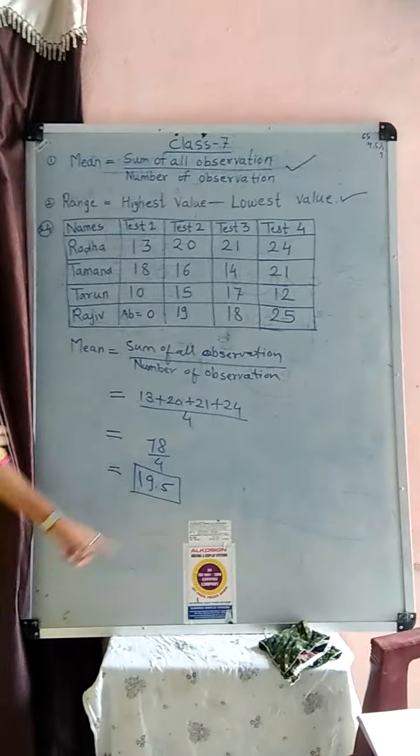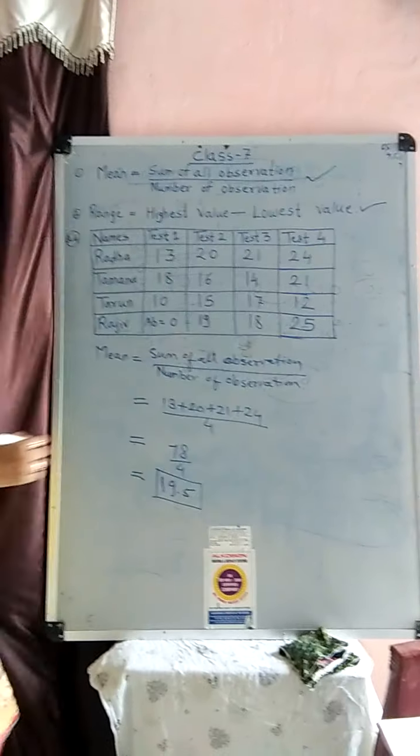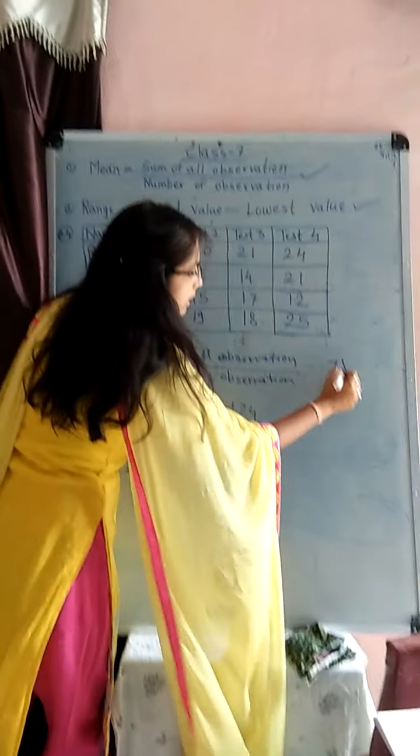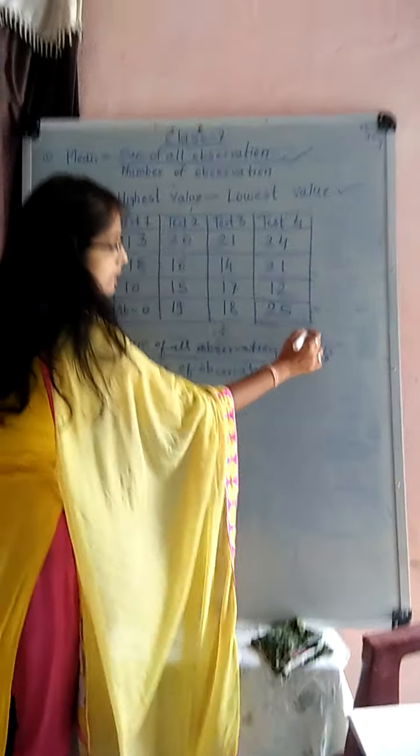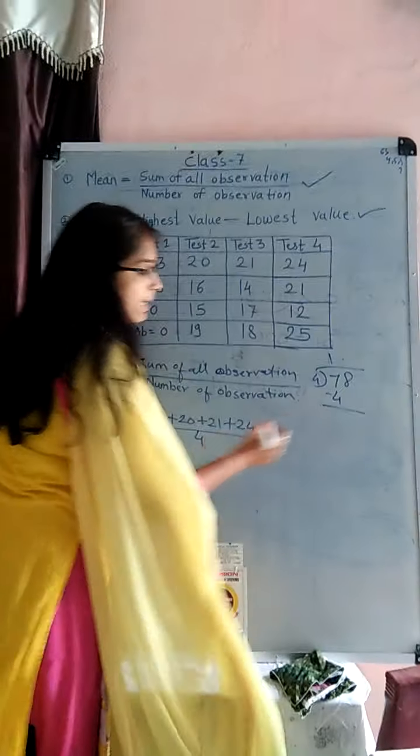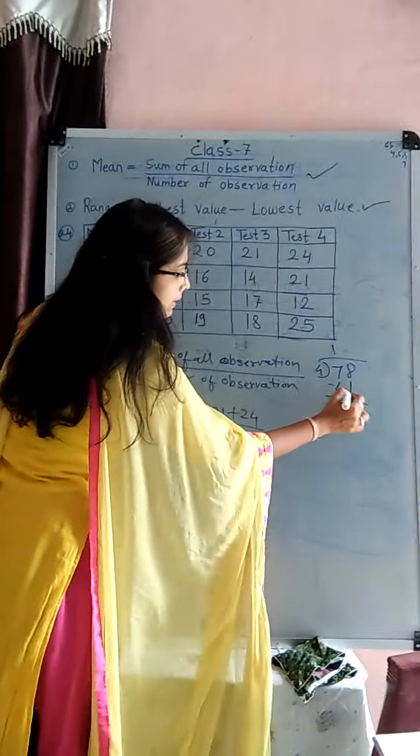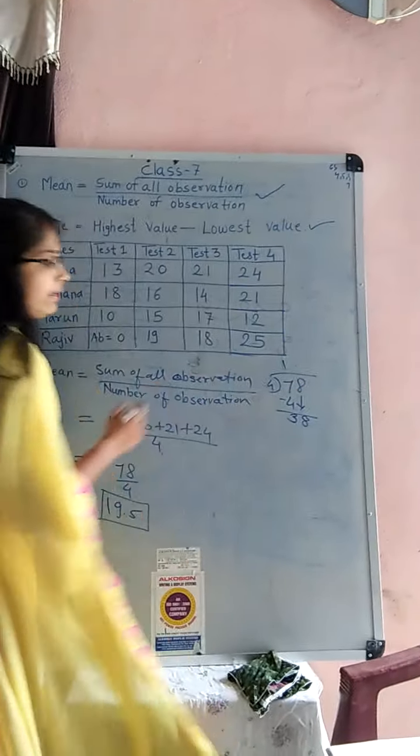78 divided by 4 is equal to 19.5. 19.5 is our answer. How we divide? Look at here, 78 divided by 4. 4 ones are 4, subtraction is 3,